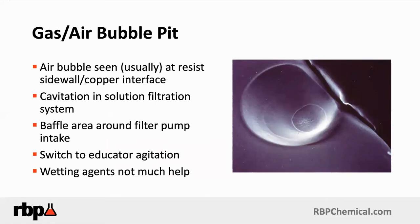Here is an example of an air bubble pit. Notice it's concave, and you can see the pit lodging right next to the sidewall of the photoresist. When you see something like this, it is most likely an air bubble being entrapped. Take a look at your filtration system in the acid-copper plating line — you can baffle the area around the filter pump intake to minimize air being sucked into the pump and cavitating. If you see fine air bubbles in the plating solution and you're using air agitation, turn the solution filtration off and let the solution degas — let the air get out — and start again.